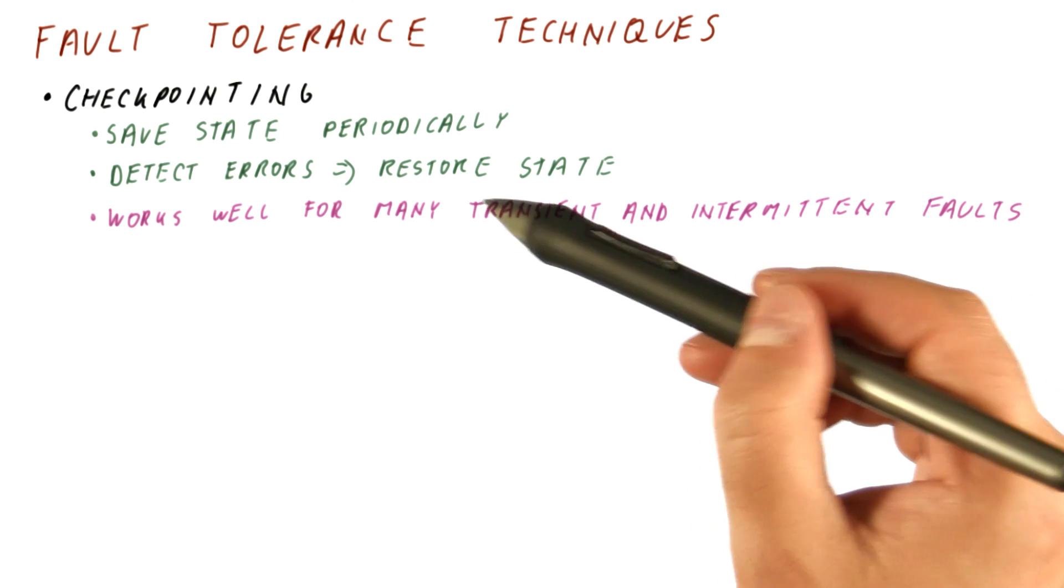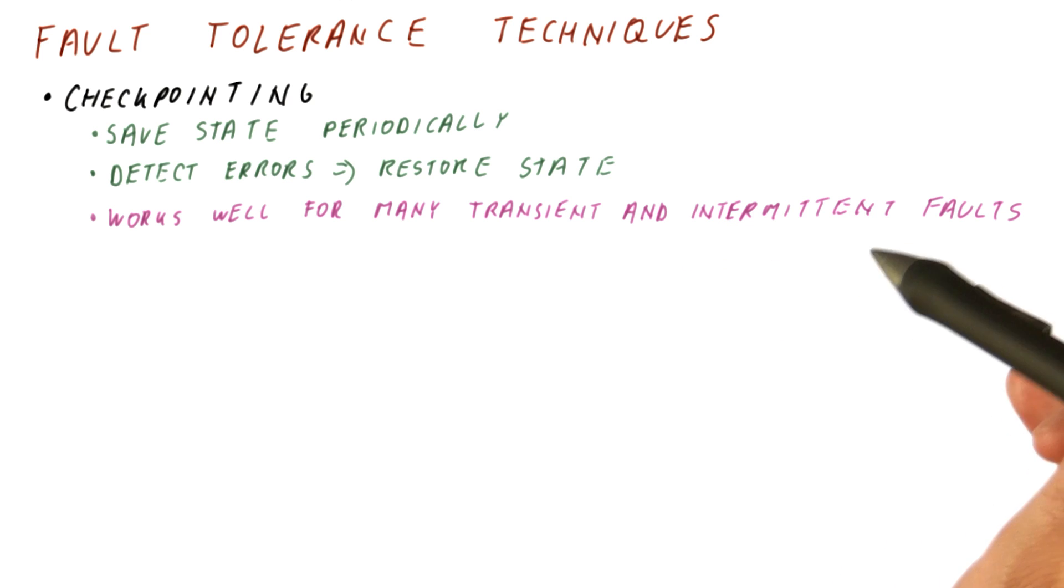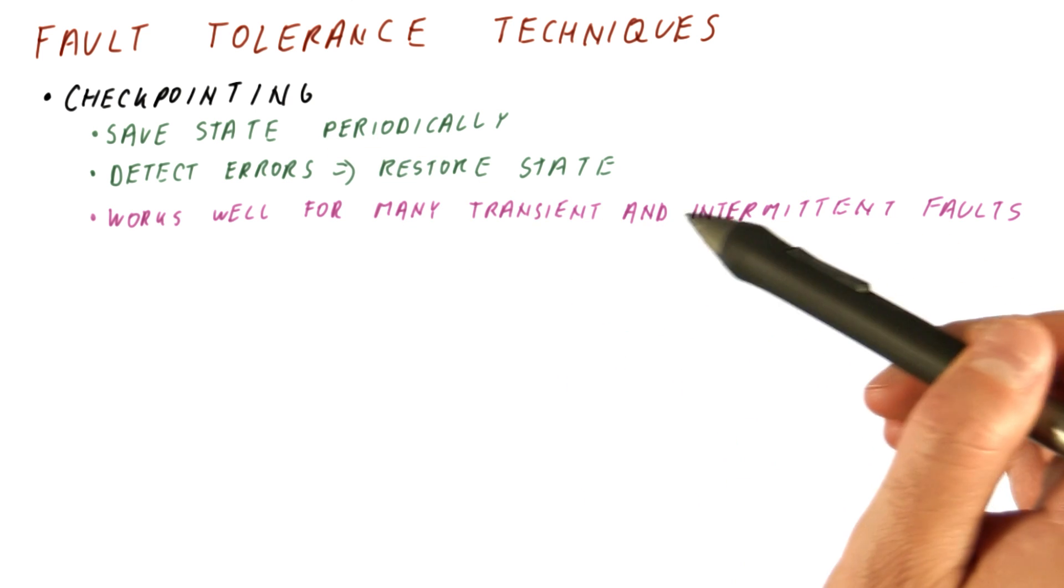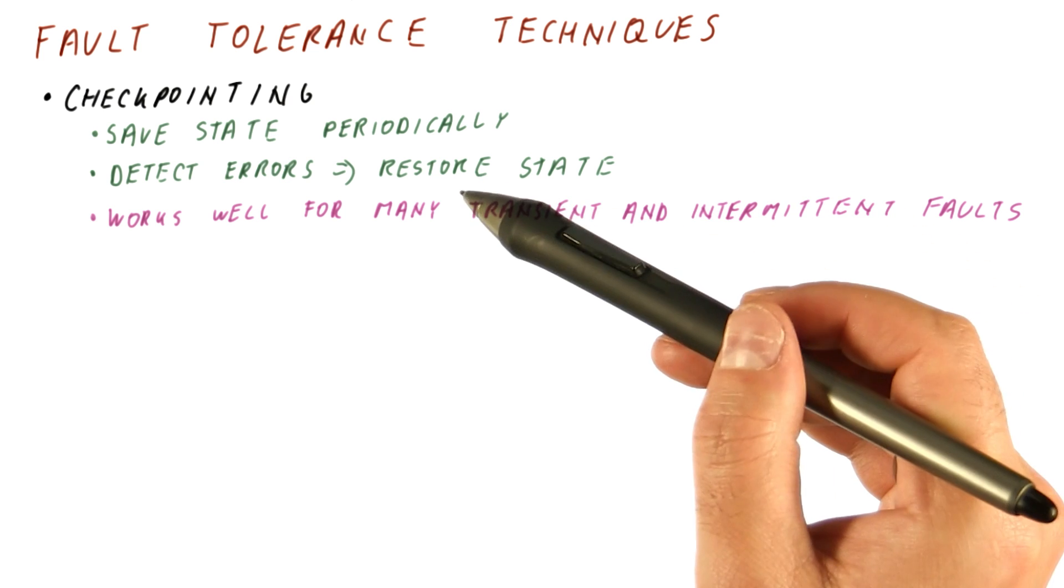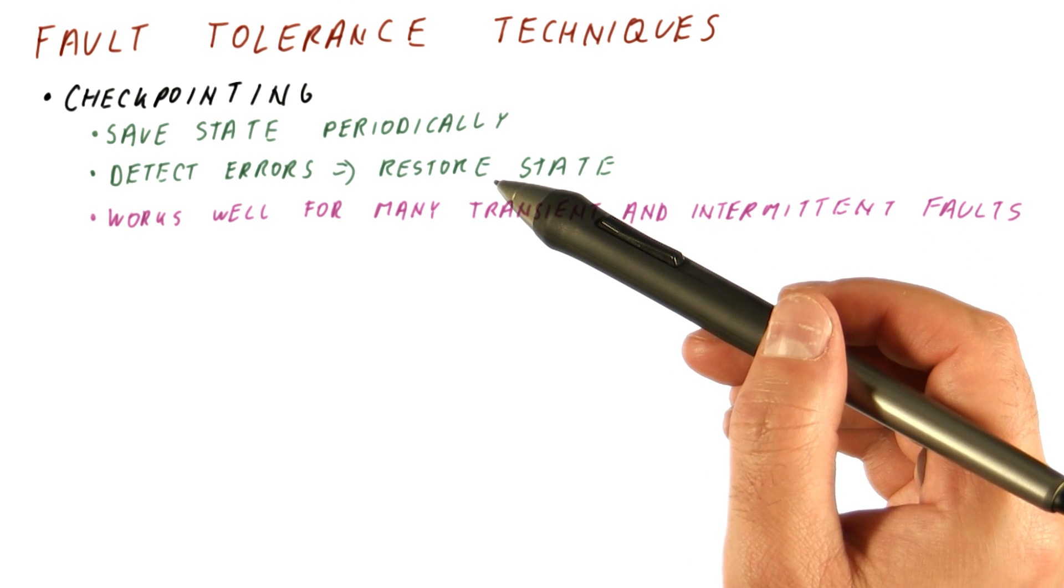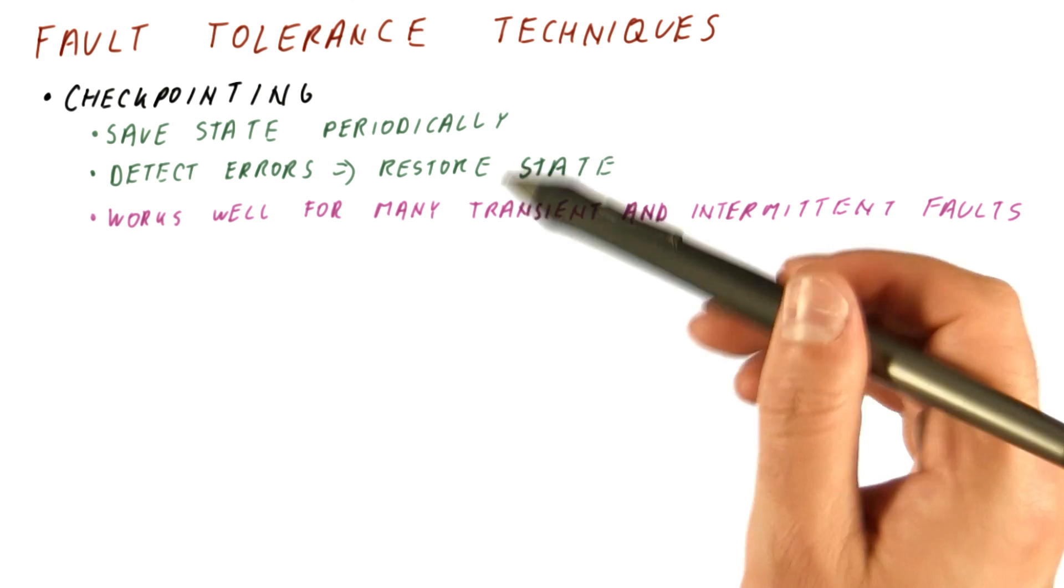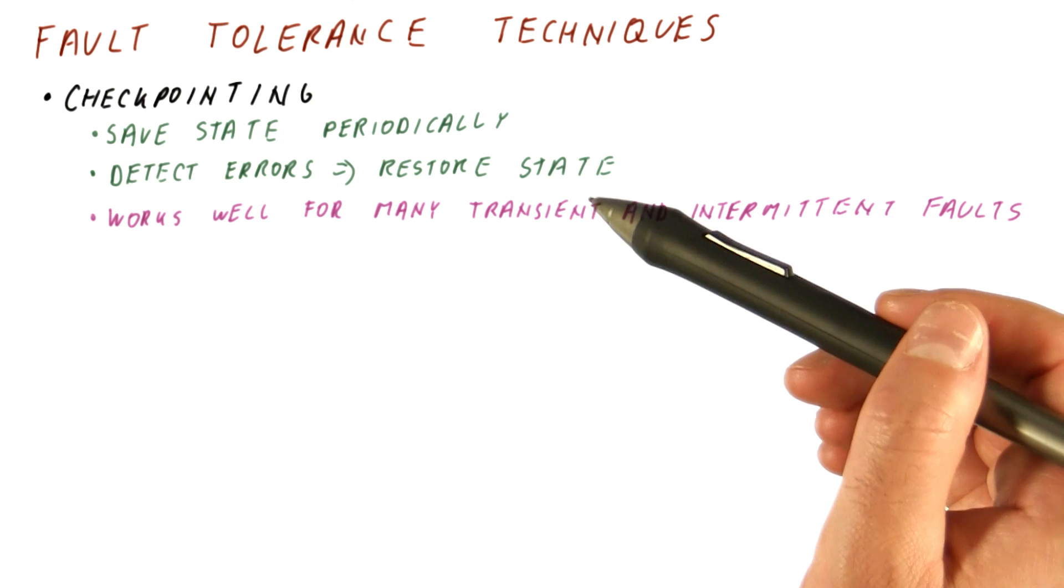If the fault is transient, it will not happen again and the system goes back to functioning normally. If the fault is intermittent, this might happen a few times until we reach the time when the fault is no longer activated. The system continues to function normally if we can quickly recover from each fault so that it doesn't affect the overall availability and reliability of the system.